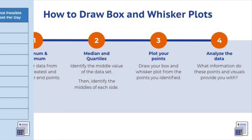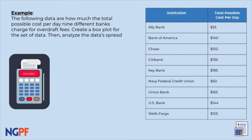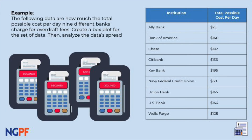Go ahead and pause the video to try this practice problem, where you are still looking at the same nine banks. Did you know that some banks max you out for overdraft once, but some other banks keep charging you if you overdraft multiple times? Analyze the data for the total possible costs that these institutions can charge you in overdraft fees per day. First, order the data from least to greatest on your paper, then identify the minimum, maximum, median, and quartile points and draw your box and whisker plot.